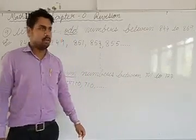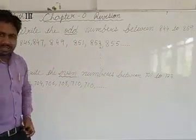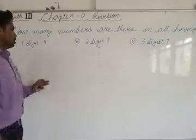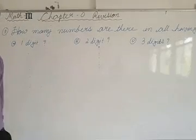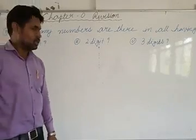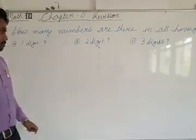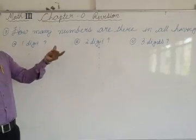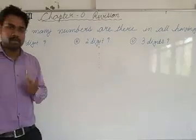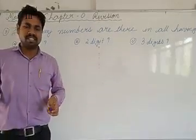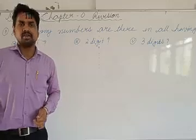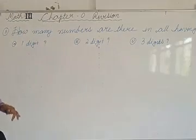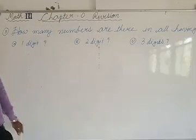This is all about odd and even numbers. The next type of problem is: how many numbers are there in total having 1 digit, 2 digit, 3 digit, 4 digit, or whatever digit it is asking for? Let's discuss some process through which you can find out how many total numbers there are.